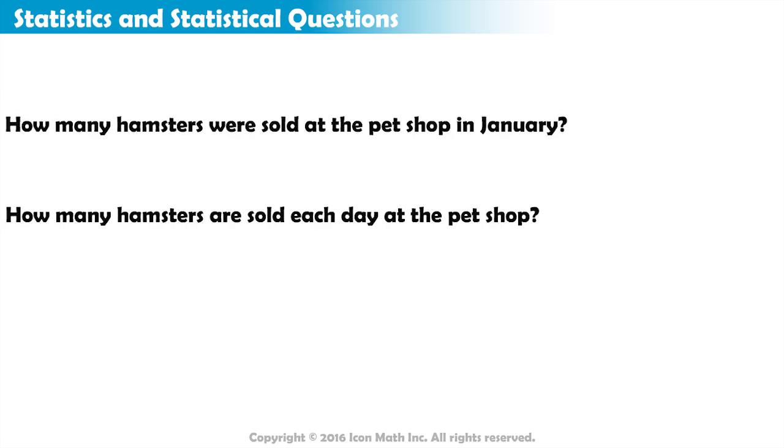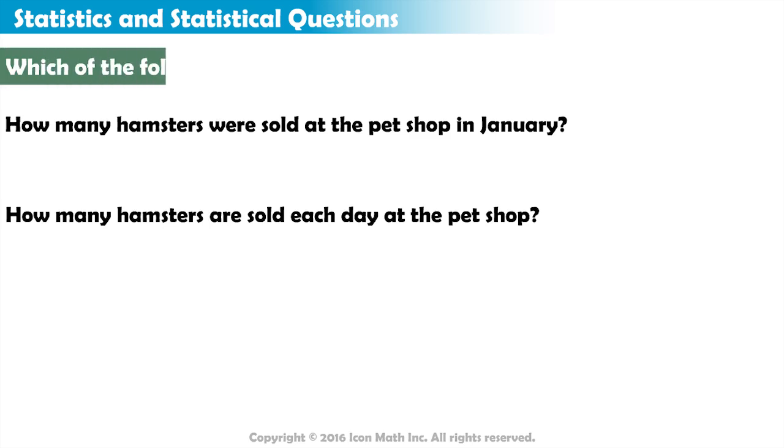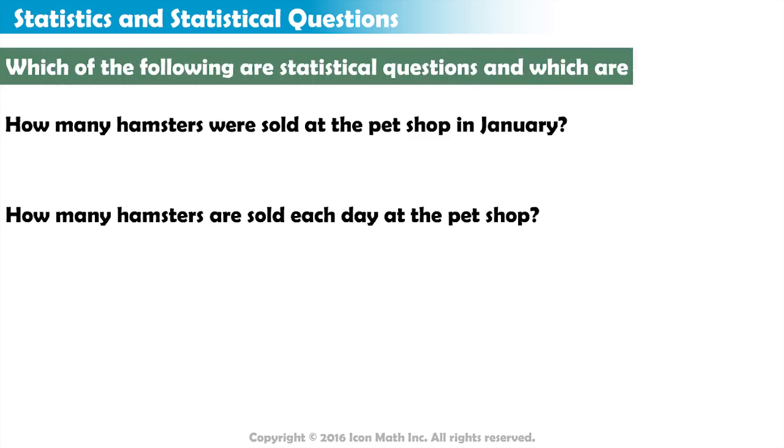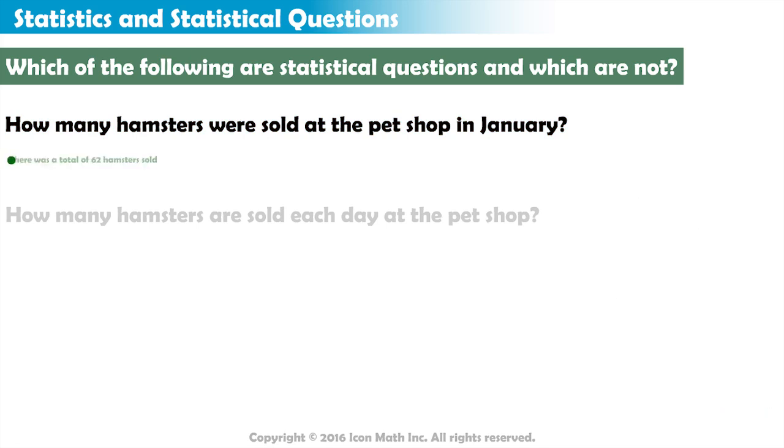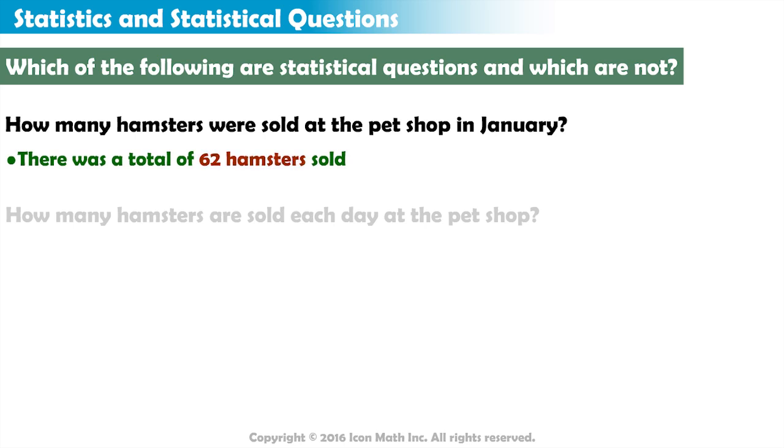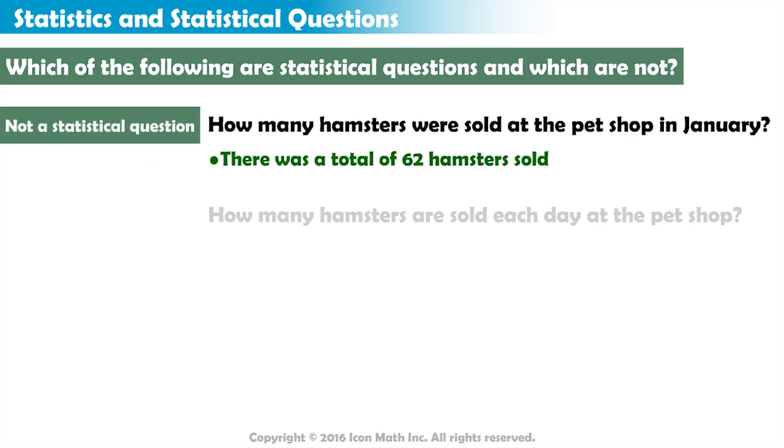Let's look at a few questions and try to identify which are statistical questions and which are not. In all, how many hamsters were sold at the pet shop in January? Can this question be answered by one number? Yes, we can say there was a total of 62 hamsters sold in January. Since we can answer this question with one number, this is not a statistical question.